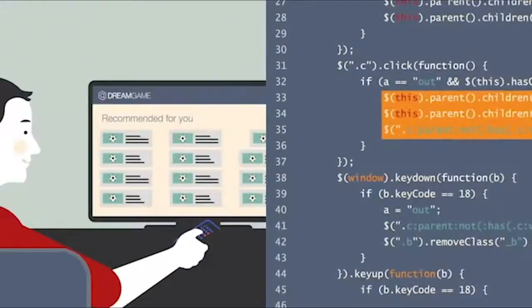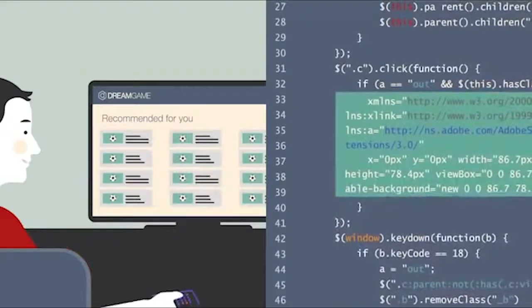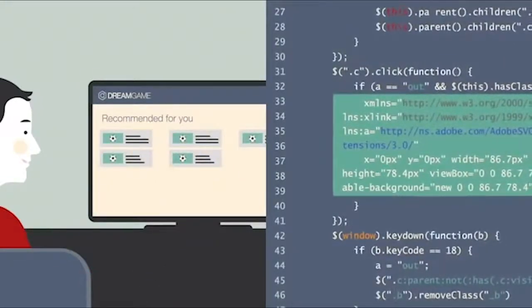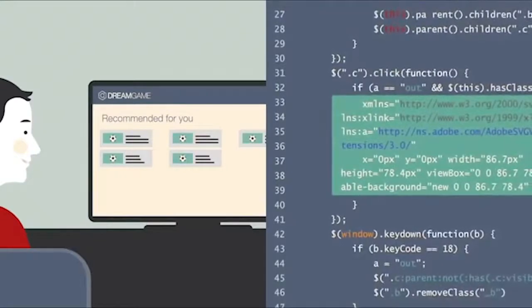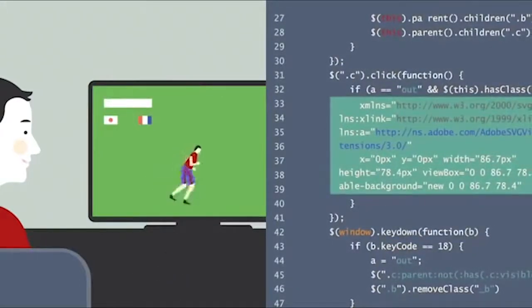The next time Ron checks Dream Game, instead of just seeing the most popular or newest content, he sees a personalized playlist that will continue to refine itself as the system learns more about his viewing habits and preferences. The result? Ron finds his favorite team's latest game right away.